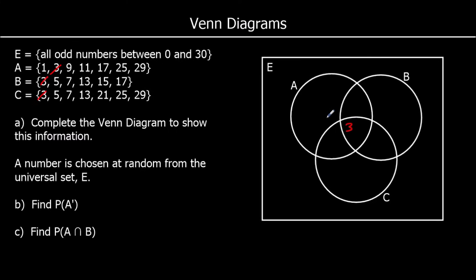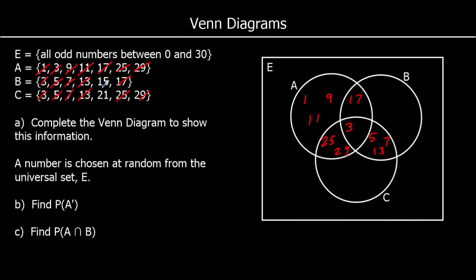In between the A and B circles goes anything else A and B share. A and B have both got 17, and there's nothing else they share. B and C have both got 5, 7, and 13. A and C have both got 25 and 29. What else goes in A? 1, 9, and 11. What else goes in B? Just 15. And in C, we want 21.